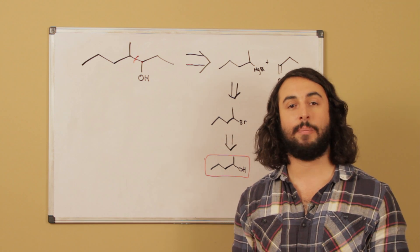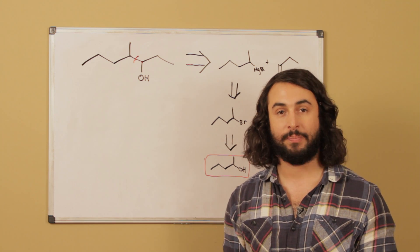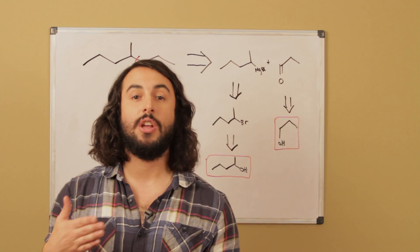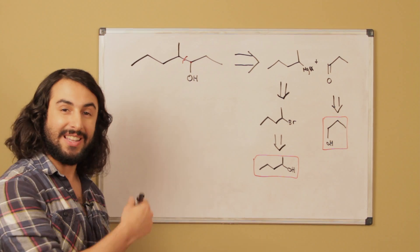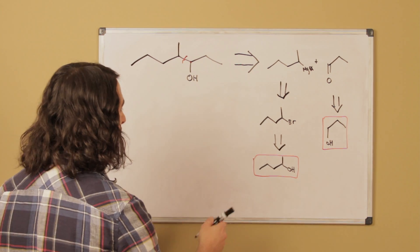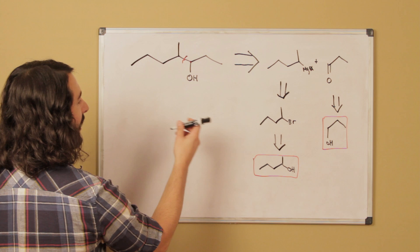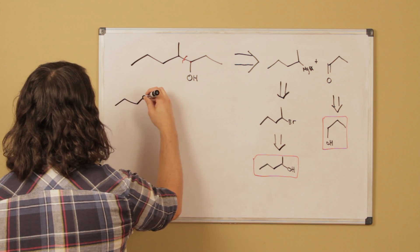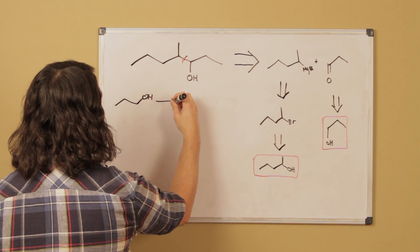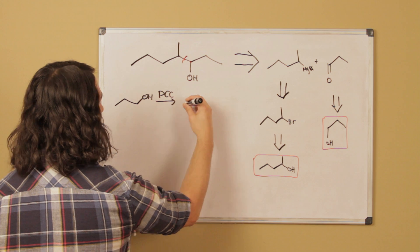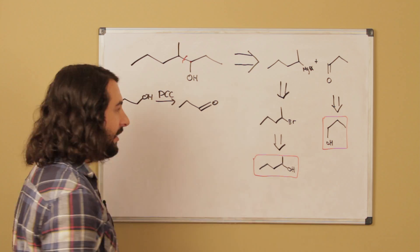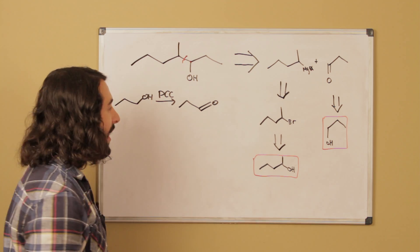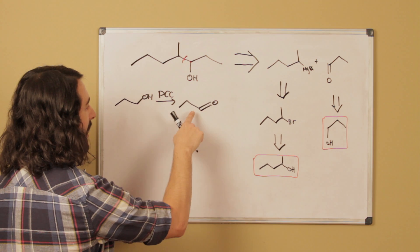So now that we have the valid starting materials, let's just discuss in the forward direction what needs to happen so that we can prove to ourselves that this is a valid synthetic pathway. So let's first take our propanol. Here's our propanol. We know that if we use PCC, PCC is the way to get an aldehyde from an alcohol, from a primary alcohol. So we just did the forward direction of this retrosynthetic step.